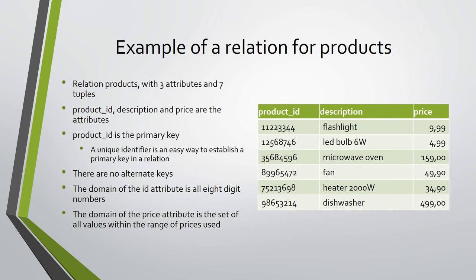A simple relation for products may contain three attributes: the product identification number, the product description, and its price. The product identification serves as a primary key, and there are no alternate keys. The use of unique identification numbers or codes is a simple and easy way to establish a primary key. The domain of the product identification attribute is all eight-digit numbers, and the domain of the price attribute is all monetary values within the range of prices the enterprise uses for its products.